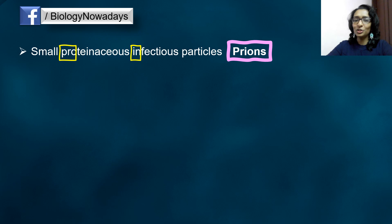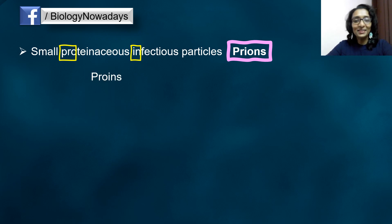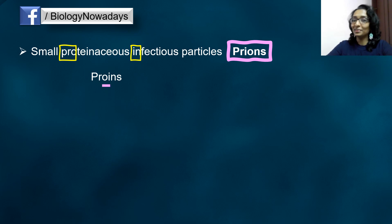But then it should be 'proins' instead of 'prions', right? Prusiner once told that as 'proins' didn't sound right for him, he just flipped two letters and it then became 'prions'.